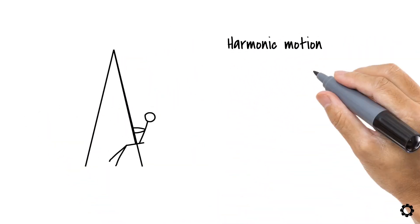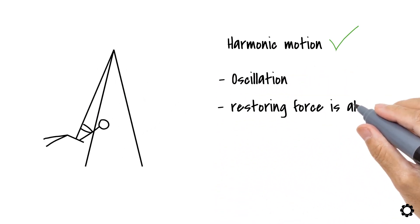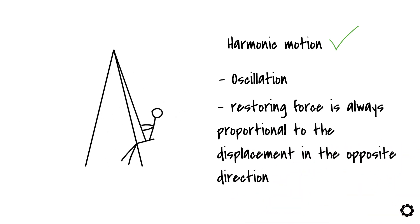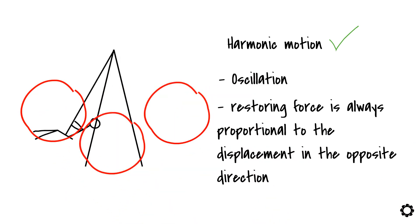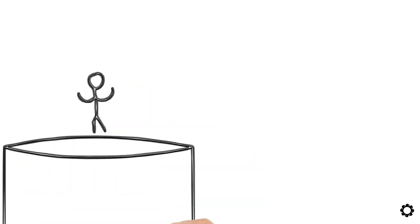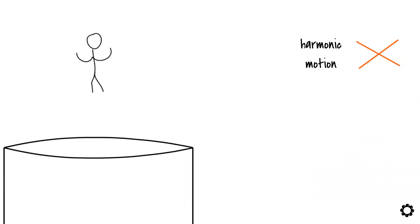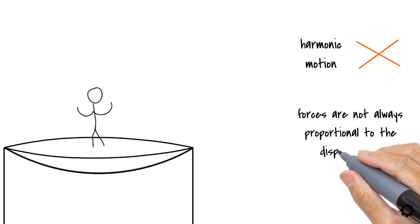If you deduced that the child on the swing is depicting harmonic motion, then you are correct. In addition to the oscillation, the restoring force is always proportional to the displacement in the opposite direction. You can see the acceleration and deceleration at the highest positions and the peak velocity at the bottom — the typical characteristics of harmonic motion. If you concluded that the child on the trampoline is moving harmonically, then unfortunately you are wrong. While the back-and-forth nature exists along with some forces acting opposite to the direction of displacement, those forces are not always proportional to the displacement.